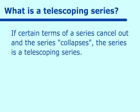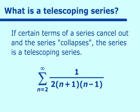So what does a telescoping series look like? In sigma notation, you could have something like the sum from n equals 2 to infinity of 1 over 2(n+1)(n-1). In this case, you have a fraction.